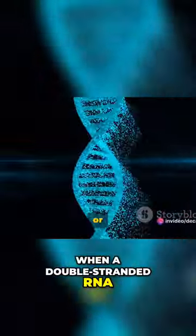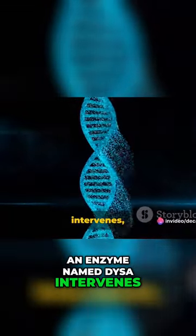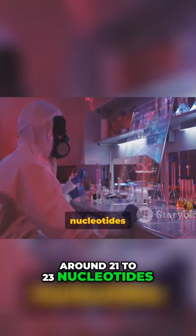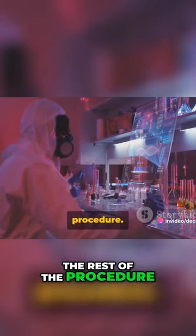When a double-stranded RNA, or dsRNA, appears, an enzyme named DICER intervenes, slicing the dsRNA into petite fragments, typically around 21 to 23 nucleotides in length. These fragments are the siRNA or miRNA that will navigate the rest of the procedure.